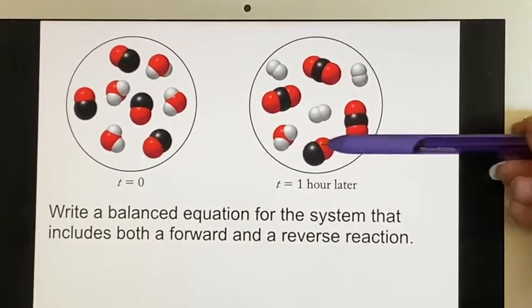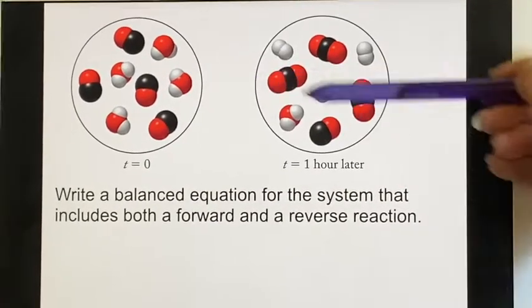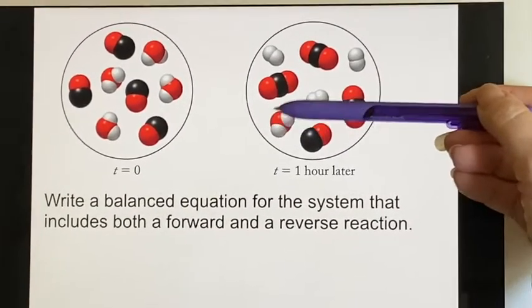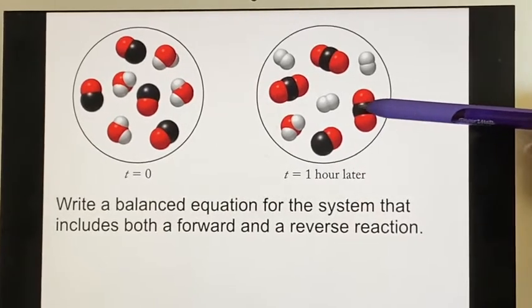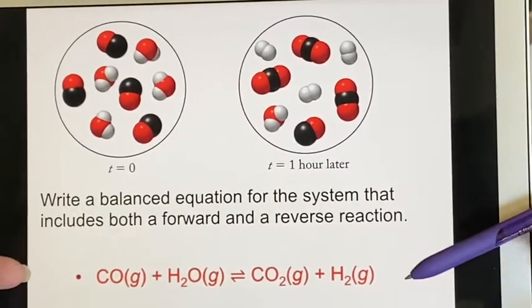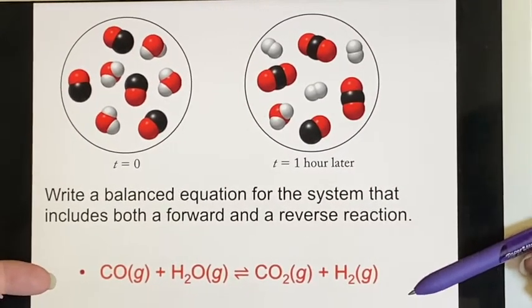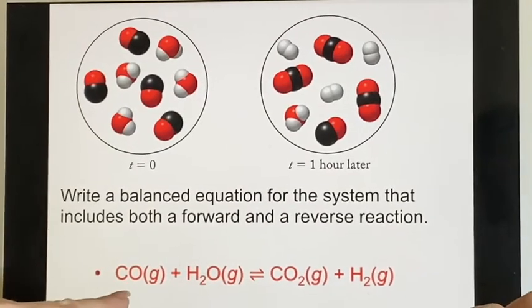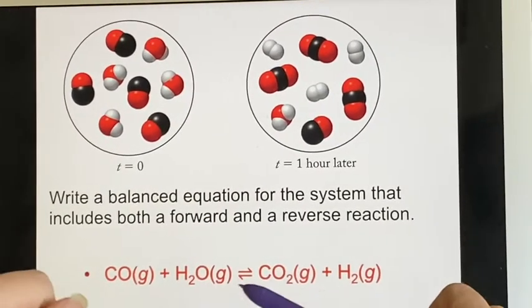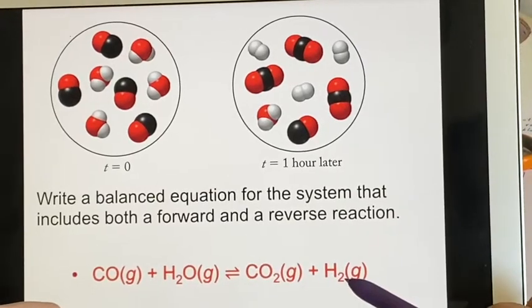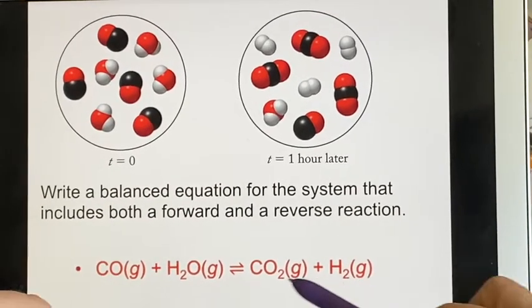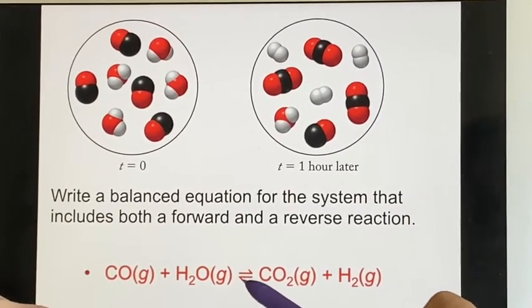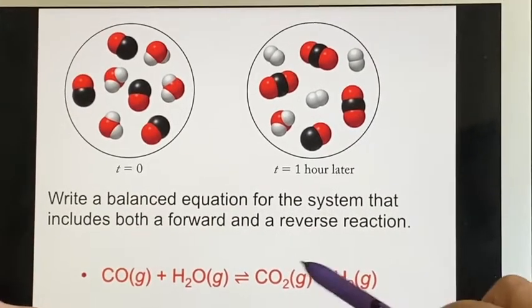On the right side, I am going to ignore the carbon monoxide and water and just focus on these. So here is what I would come up with with my balanced equation: that the carbon monoxide and water can become carbon dioxide and hydrogen gas, or the reverse direction. The carbon dioxide and hydrogen gas can become carbon monoxide and water.